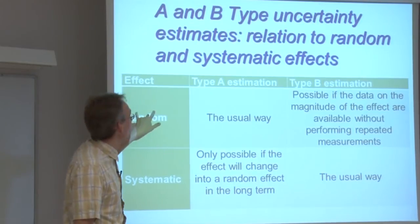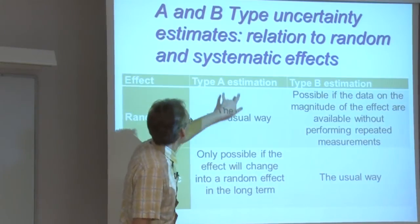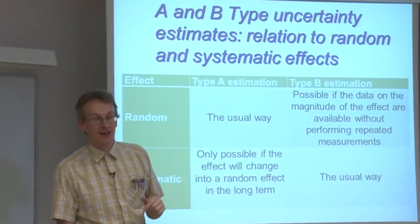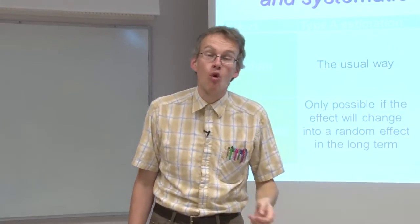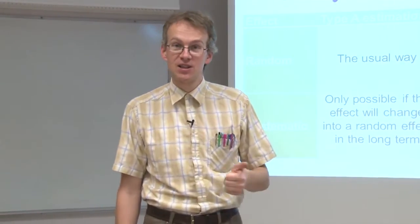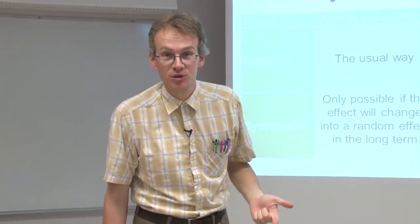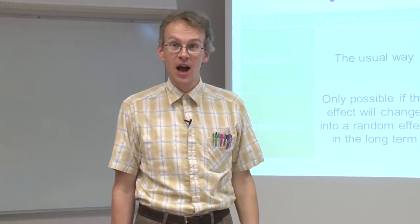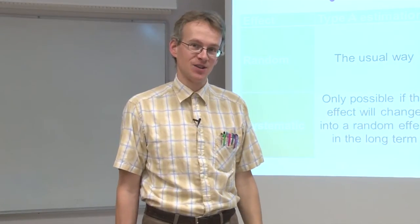Random effects most usually are estimated by type A estimates. So all the repeatabilities, within-lab long-term reproducibility, and so on are typical type A uncertainty estimates.